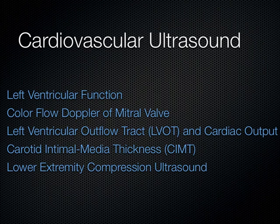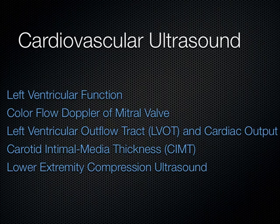Last year we described some of this — contractility, the mitral valve coming up and smacking the septum. We're going to review that, talk about color flow Doppler across the mitral valve in both the parasternal long and apical four chamber, learn how to measure the left ventricular outflow tract diameter, combine that with the velocity time integral of flow across the aortic valve to give us cardiac output. So we're going to talk about hemodynamics.